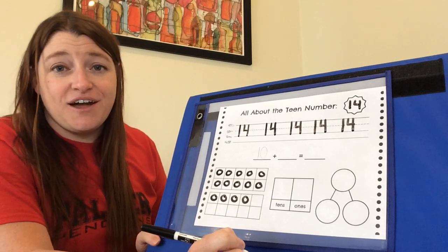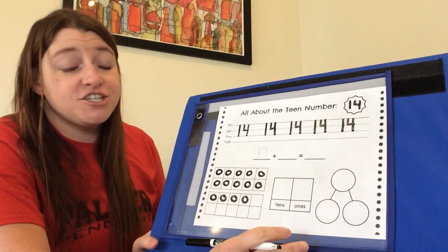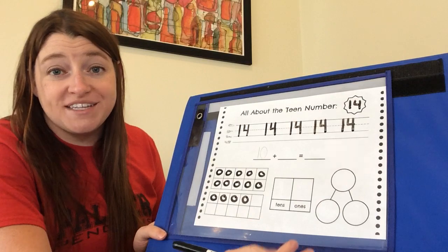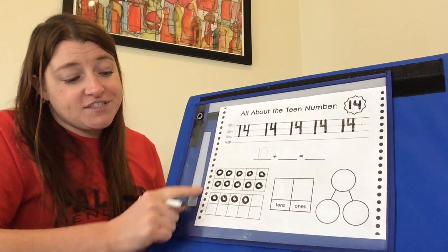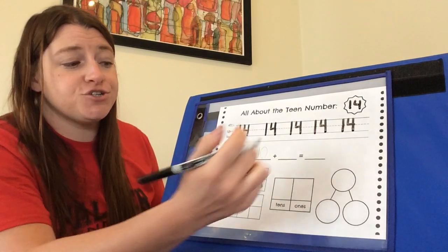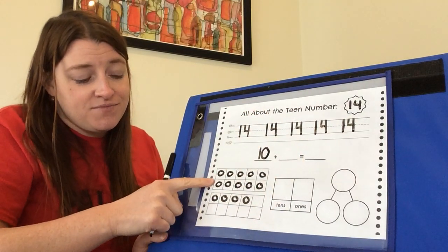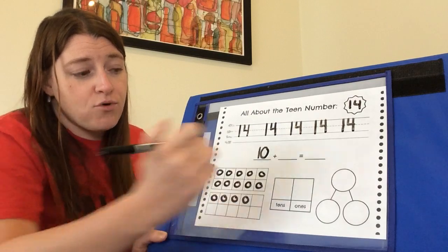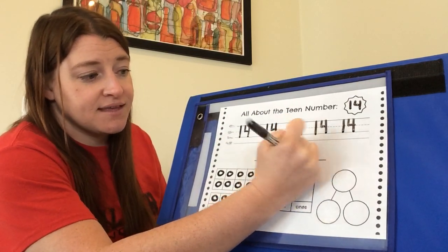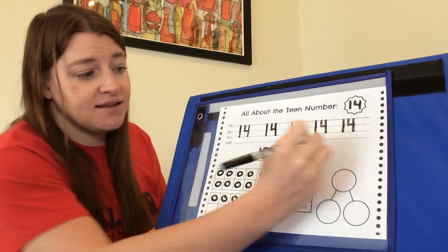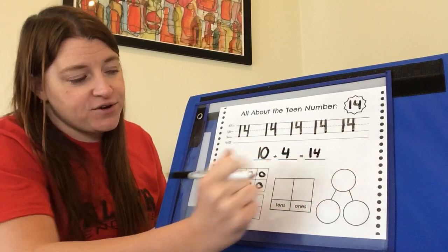And now we can fill in the other parts of our sheet to tell more and to show the number 14 in different ways. We showed 14 in a double 10 frame and now we can show 14 in a number sentence. 10, that's this 10 frame, plus four more equals 14. 10 plus four equals 14.